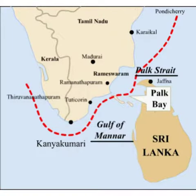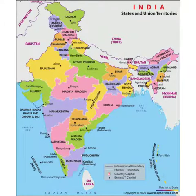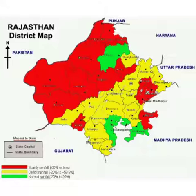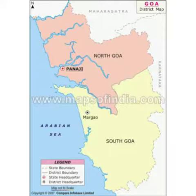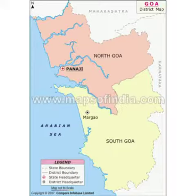India is a vast country. For administrative purposes, the country is divided into 28 states and 8 union territories. New Delhi is the capital of India. Rajasthan is the largest state and Goa is the smallest state in terms of area.